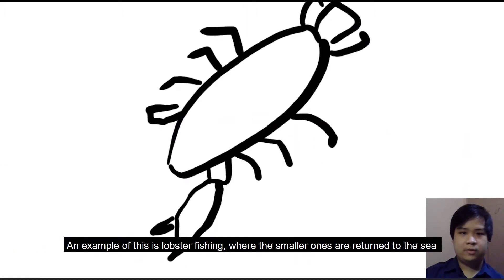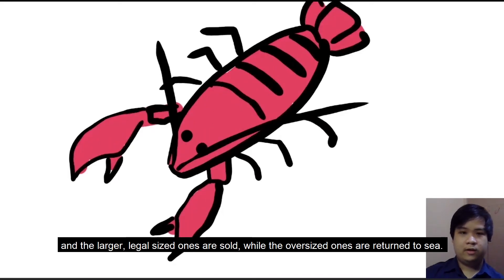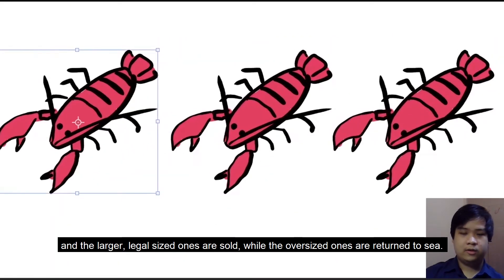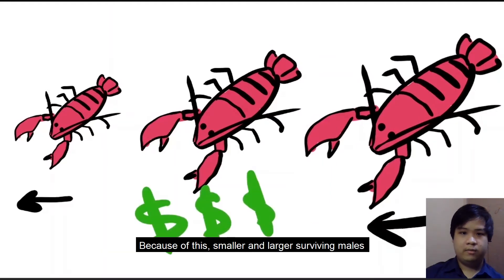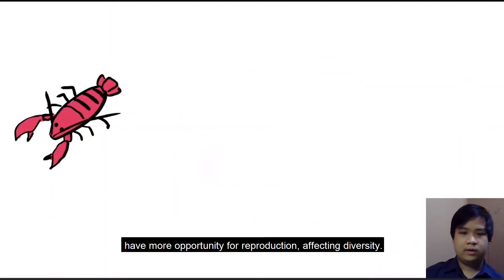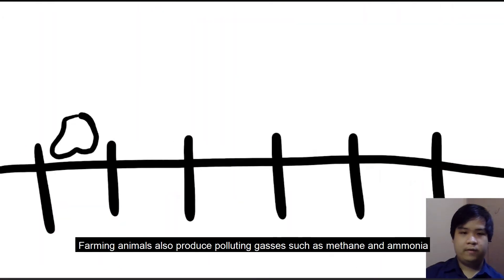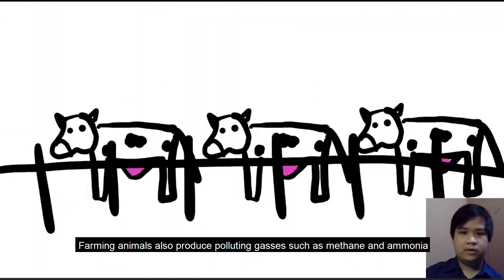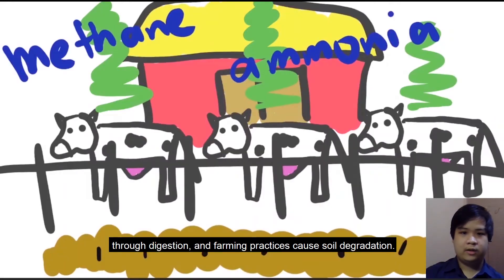An example of this is lobster fishing, where smaller ones are returned to the sea and the larger, legal-sized ones are sold, while oversized ones are also returned to sea. Because of this, smaller and larger surviving males have more opportunity for reproduction, affecting diversity. Farming animals also produce polluting gases such as methane and ammonia through digestion, and farming practices cause soil degradation.